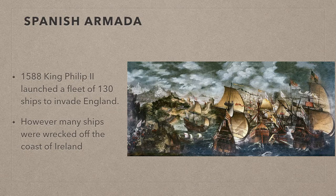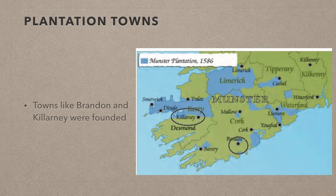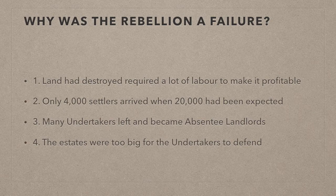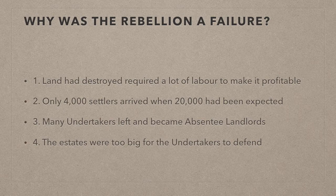While the Munster plantation was more successful than the Laois and Offaly plantation, it was still not particularly successful. New towns like Bandon and Killarney were founded, but the plantation itself was not a massive success. The first reason was that the country in Munster was desolate and destroyed, requiring a lot of labour to make it profitable. Only 4,000 English settlers arrived when at least 20,000 had been expected, so the settlers had to rent out the land to the Gaelic Irish — completely undermining their undertaking to remove the Gaelic Irish from the land. The second reason was that many of the undertakers left and returned to England; these were known as absentee landlords. The final reason was that the estates were too big for the undertakers to defend, leaving them vulnerable to attacks from the Gaelic Irish who were trying to reclaim their land.